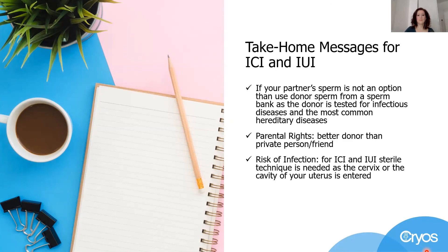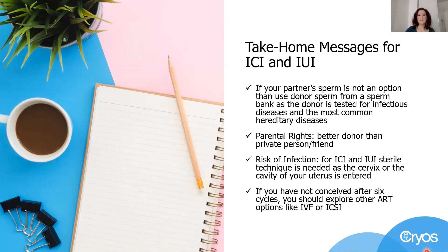Regarding the risk of infection for IUI and ICI, sterile technique is needed as the cervix and the cavity of the uterus are entered. And last but not least, if you have not conceived after six cycles, then it is a good idea to consider other treatment options like IVF.